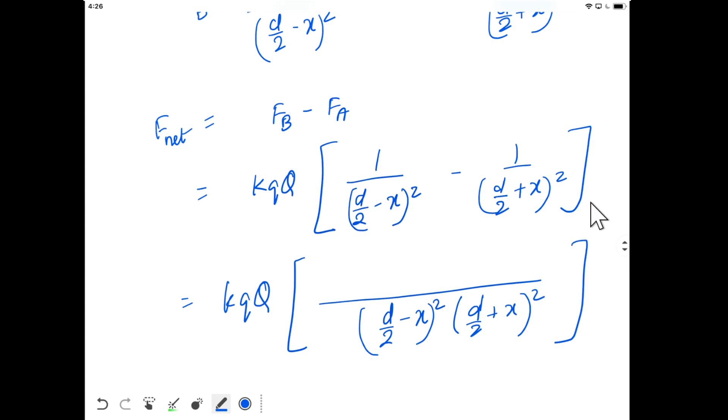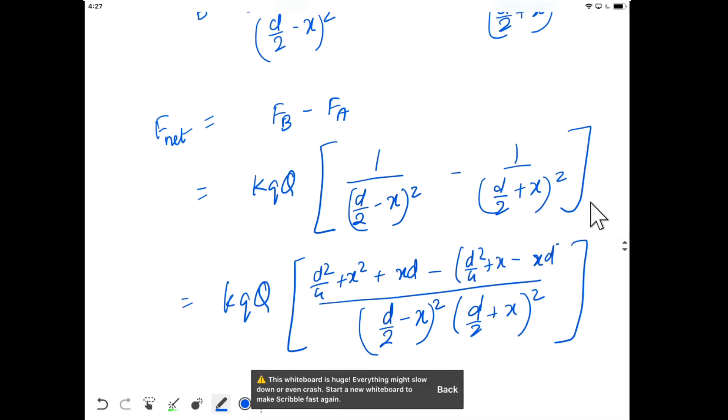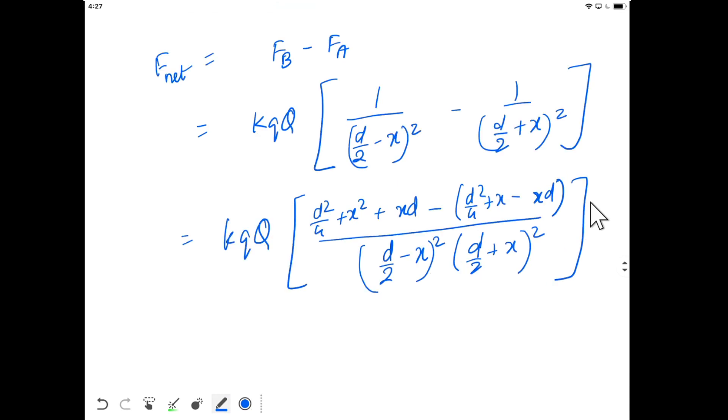In the numerator we get d²/4 + x² + 2xd minus d²/4 + x² minus 2xd. The terms cancel out. This will come out to be kQq times...